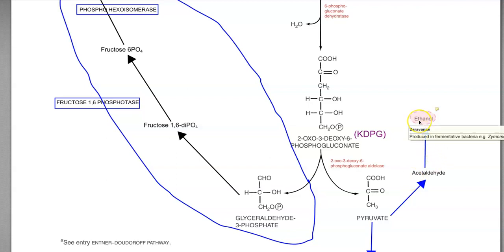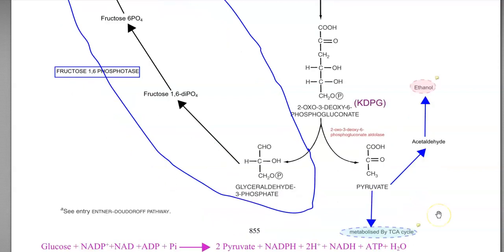Pyruvate can be directly converted into acetaldehyde and ethanol under anaerobic conditions. This is the classical way in which Zymomonas mobilis metabolizes glucose by using the ED pathway under anaerobic conditions. Under aerobic conditions, the pyruvate formed by the ED pathway can be metabolized by the TCA cycle.